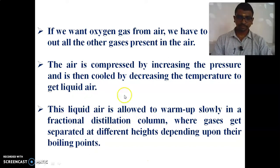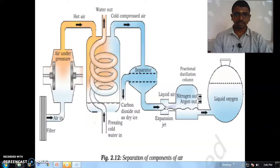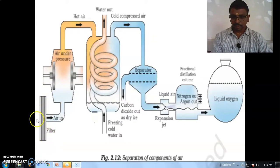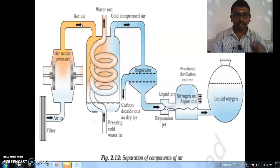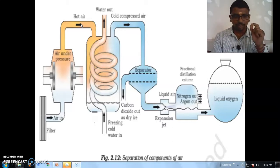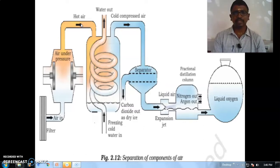Let me see the experimental setup. So this is the experimental setup. We have to pass the air through a filter and apply it under pressure. Under pressure, the air will go in, and the temperature here is low while the pressure is high. The purpose of applying pressure and decreasing the temperature is that the air is converted to liquid air.